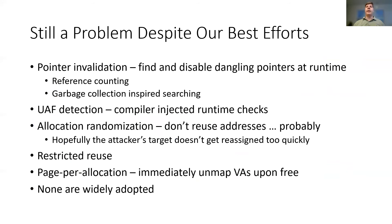The use-after-free error type is well known and has been the subject of substantial research. A wide variety of proposed countermeasures have been published. Pointer invalidators attempt to find and neutralize dangling pointers. Custom compilers add runtime checks to verify the pointer is still valid. Meanwhile, secure allocators delay reusing free slots for a random interval. However, none of these diverse techniques has gained widespread acceptance. Most have added unacceptable CPU overhead or don't provide a strong enough guarantee to justify implementation in real-world workloads outside of debugging tools.